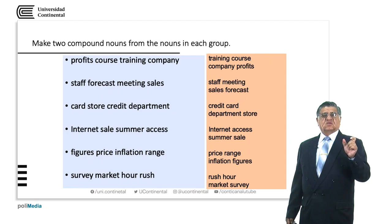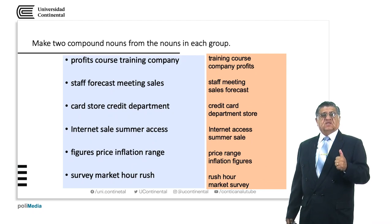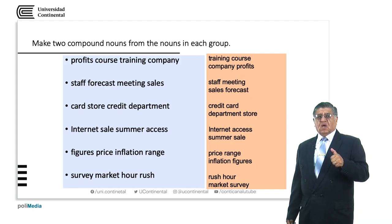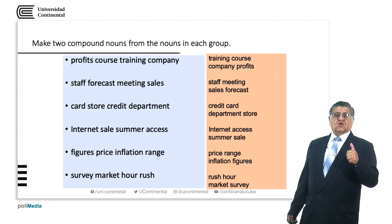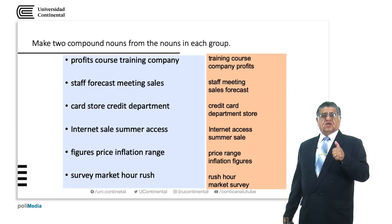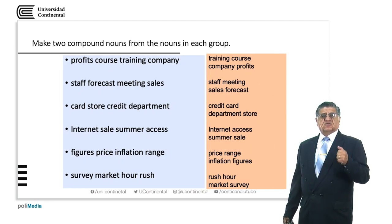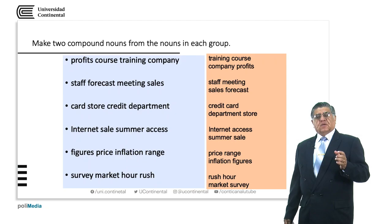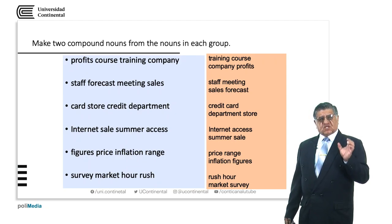What does 'profits course training company' refer to? It's a company that trains and has a course on profits — a training company with a profits course. And 'staff forecast meeting sales' — we have a sales figure that was predicted by the staff in a meeting.